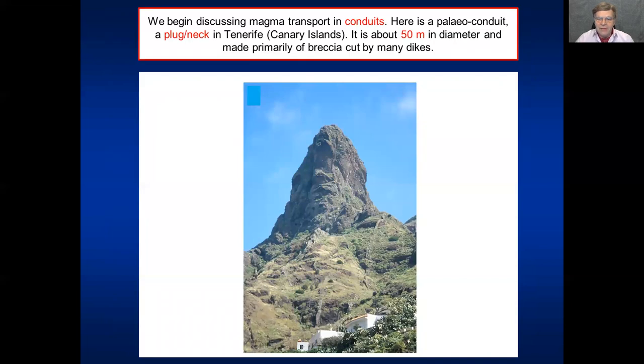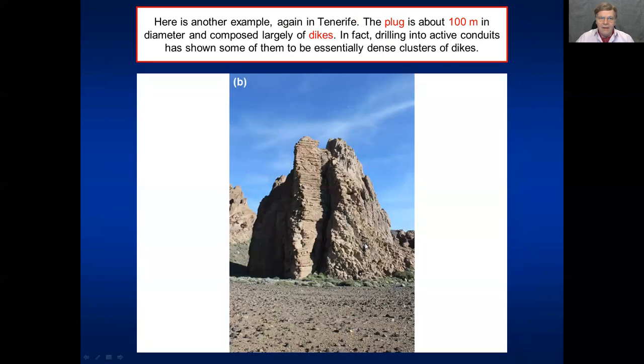So if you first look at the conduits, this one here is in Tenerife. It's a paleo conduit, it's a plug or neck, around 50 meters in diameter and mainly composed of breccia and cut by many, many dikes. Here's another one in Tenerife, inside the Las Cañadas collapse caldera. It's around 100 meters in diameter here and is mainly composed of dikes. In fact, drilling into some active conduits today has shown that they are often composed of clusters of dikes. Of course there's breccia in between, but often the cluster of dikes is the main thing in the conduits.